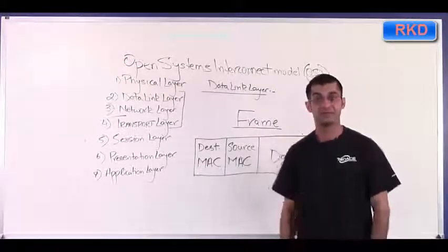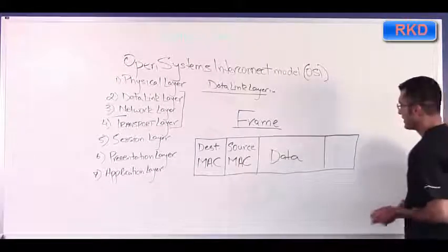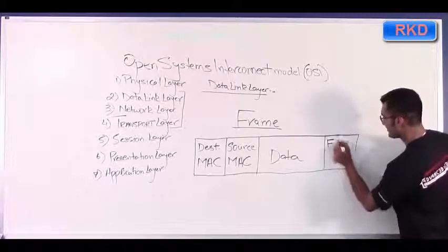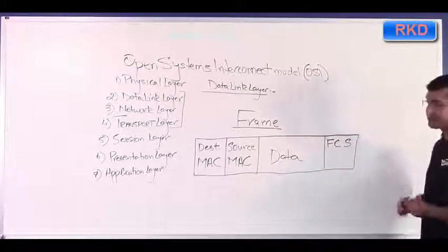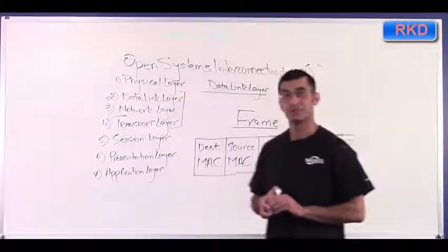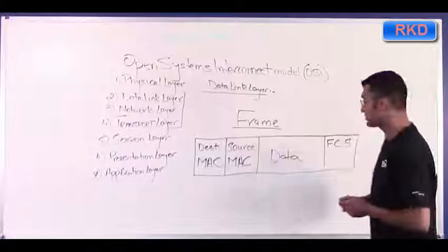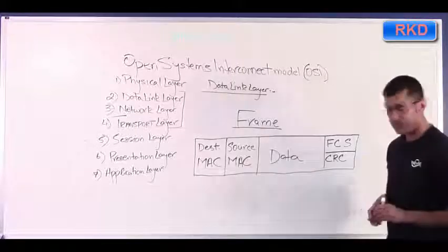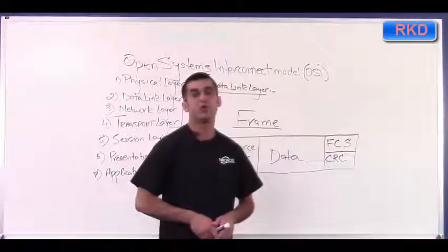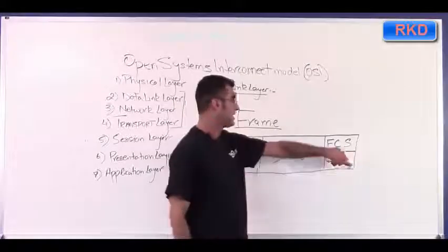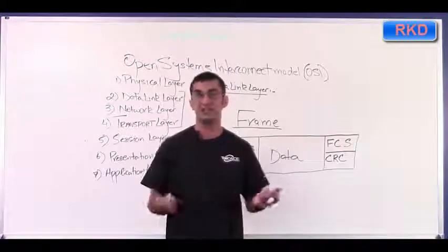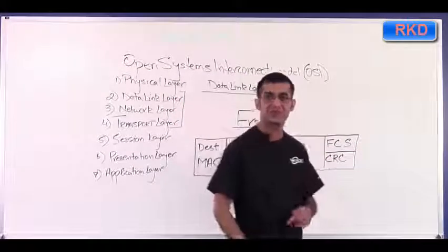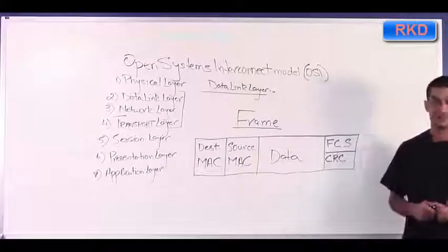The last field is called the frame check sequence — FCS — which houses what is called the CRC, or cyclic redundancy check. In some books you won't even see FCS; it'll just say CRC. But in actuality, the last field is called the frame check sequence and it houses the cyclic redundancy check.